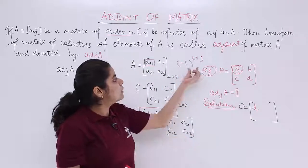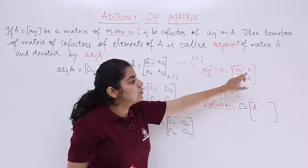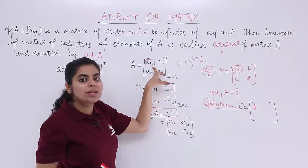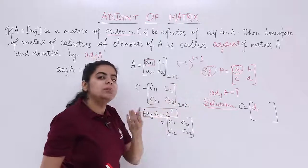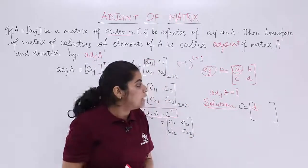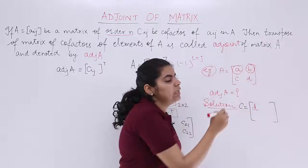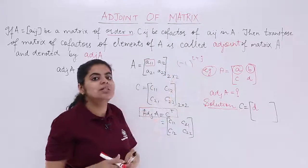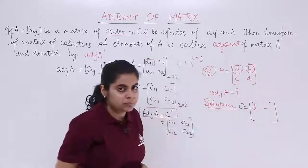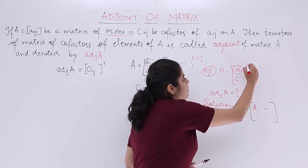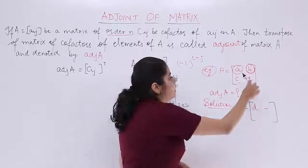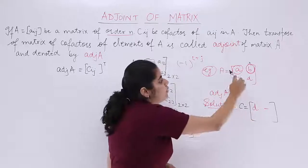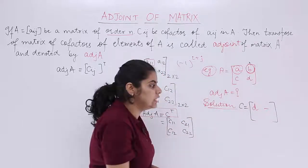Now let's find the cofactor for B. B is at position A12, so 1 plus 2 equals 3. Minus 1 to the power 3 means a minus sign. Ignoring the first row and the second column, I am only left with C. So I write minus C here.